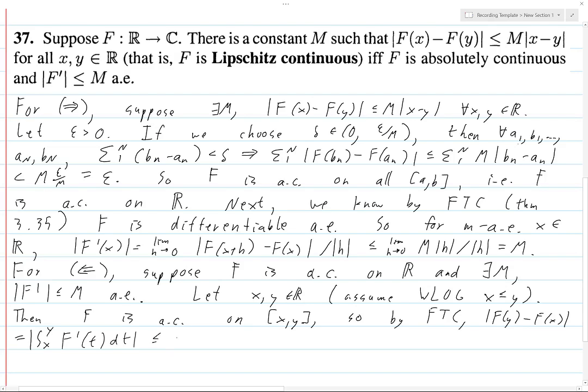And then less than or equal to, we bring the norms inside, integral from x to y of ||F'(t)|| dt. But this we know is less than or equal to the integral from x to y of M dt, and this is just M|x - y|, and that's exactly what we wanted, and so this completes the proof.